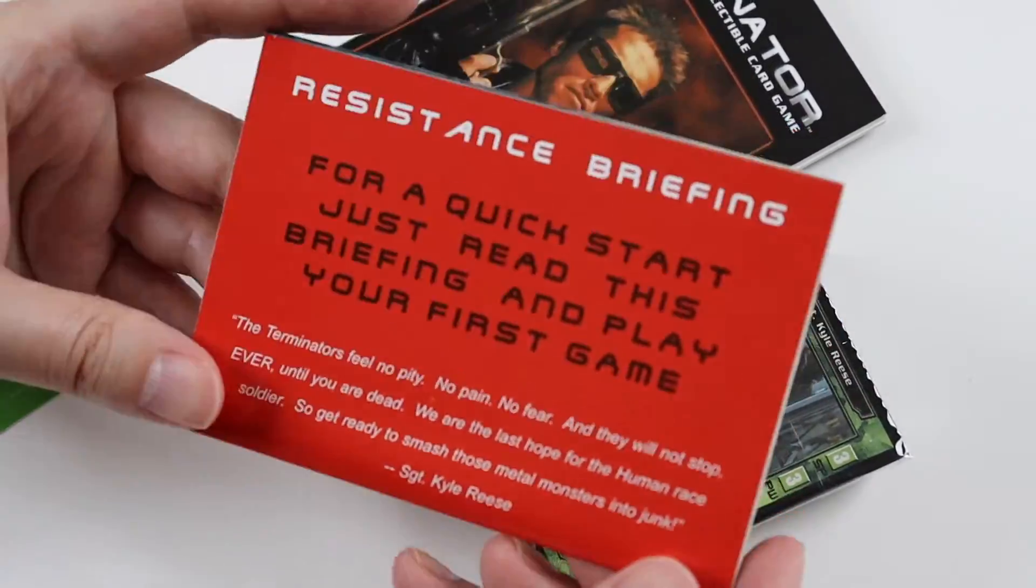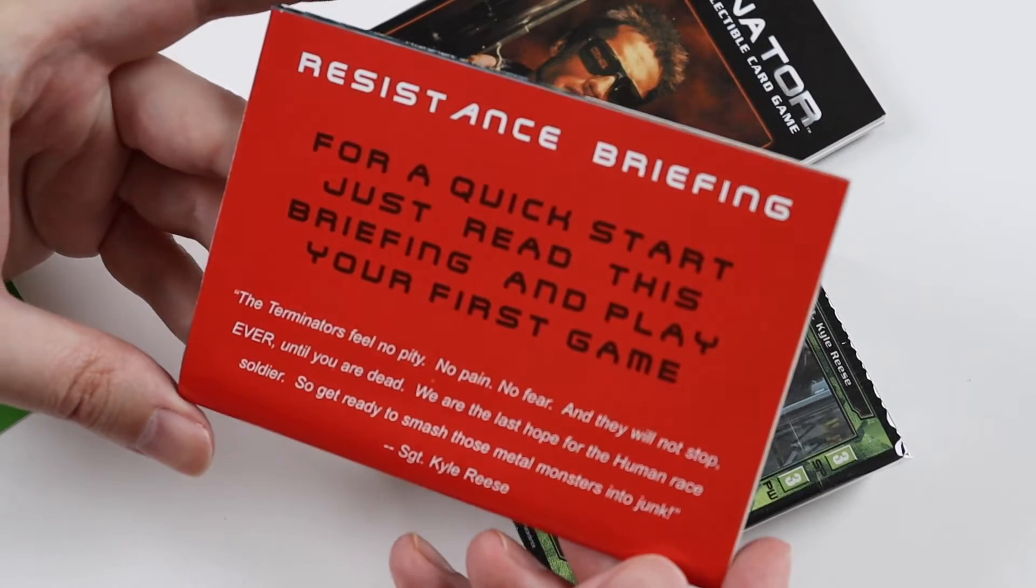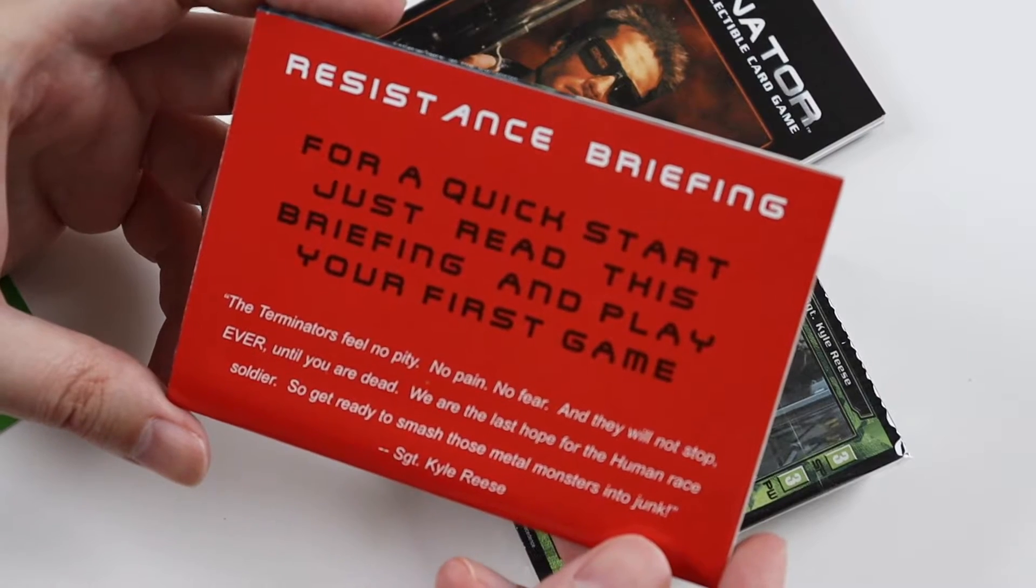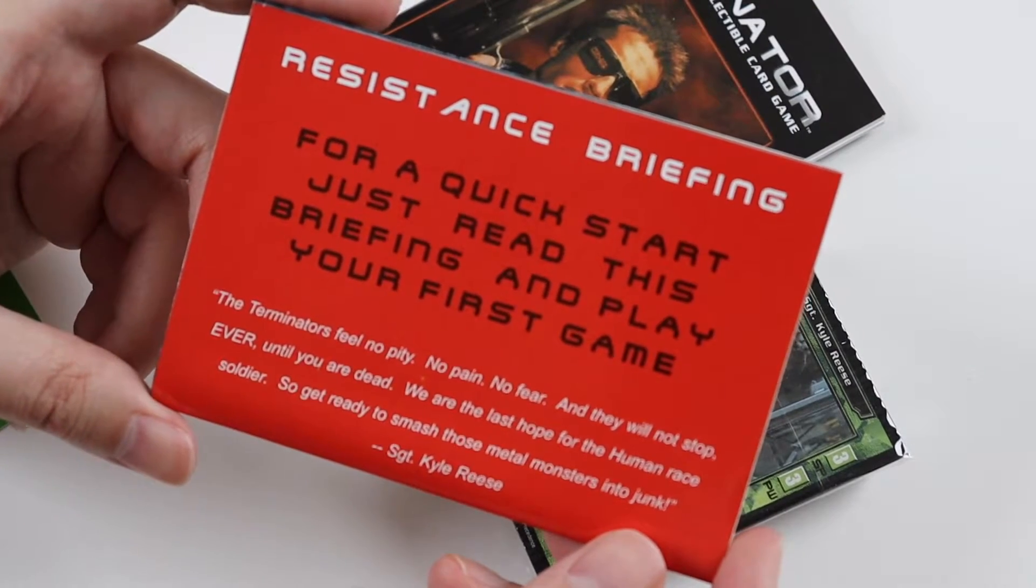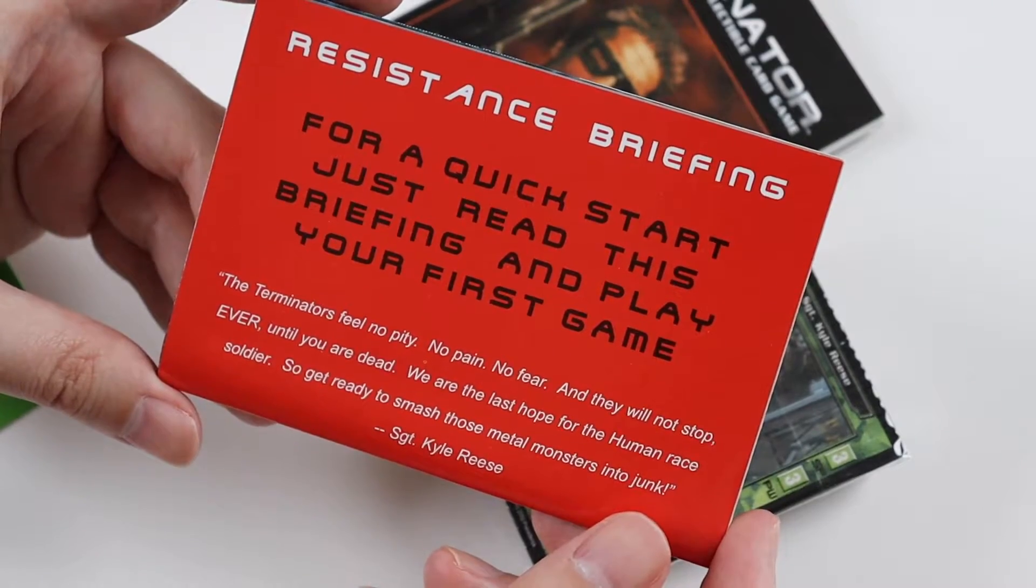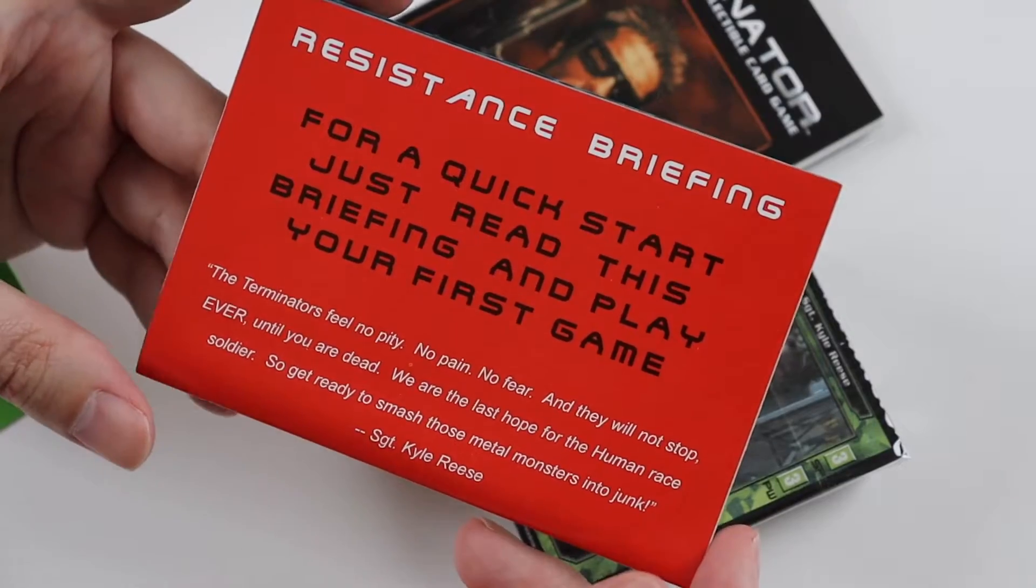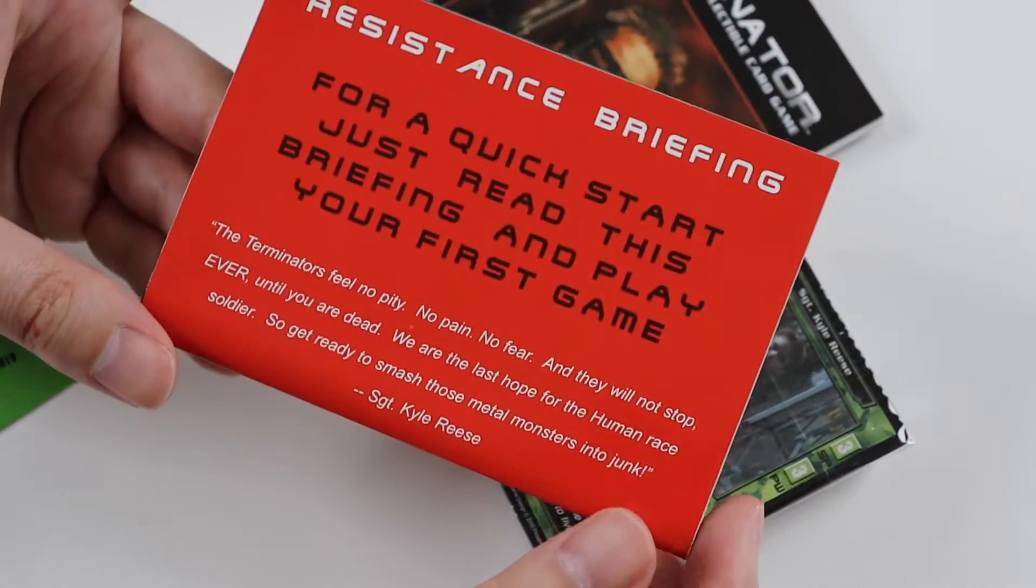Then you get a quick start rules sheet. They did this with the Aliens Predator. In fact I should say the Aliens Predator card game is actually compatible with the Terminator one which is pretty random. But also very cool at the same time. You can actually play it I believe together and they will actually work.